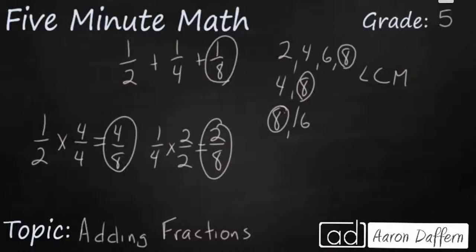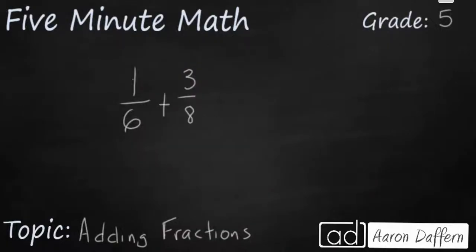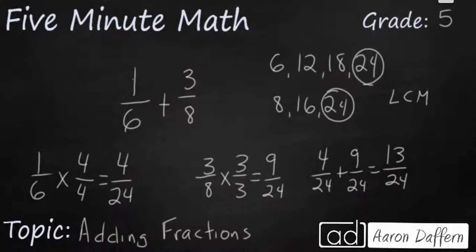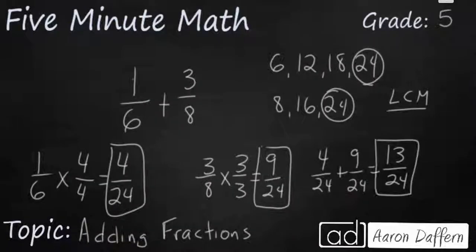Now you try. Go ahead and pause the video and try to solve one-sixth plus three-eighths. When you have your answer, start the video back up and check your work. You should have found that twenty-four was your least common multiple, changed your one-sixth to four twenty-fourths, your three-eighths to nine twenty-fourths, added them together to get thirteen twenty-fourths.